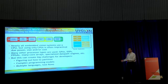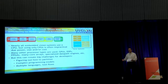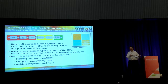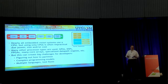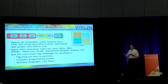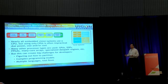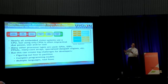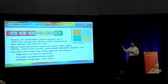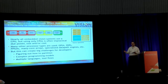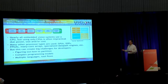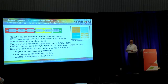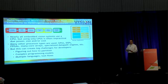With heterogeneous processing comes complexity. The developer has to figure out which portion of the processing load to put on each processing element and coordinate their activities — that requires deeper understanding than just running everything on the CPU. Fortunately, with the improvements we're seeing in heterogeneous architectures, tool flows, and programming models, this is becoming a lot easier now than it was even just a year or two ago.